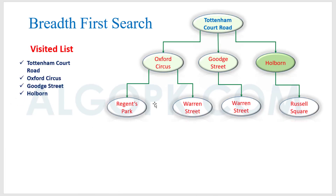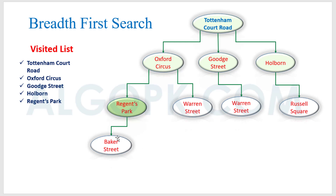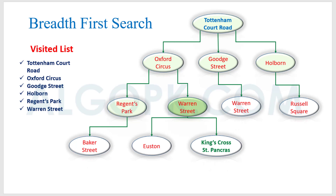We add it to the visited list. Now from this node, this node is our goal state, and these two cities are next reachable. But we can't stop here — we have to proceed until we actually reach and visit the goal node.